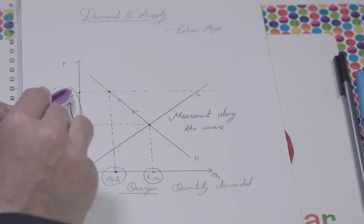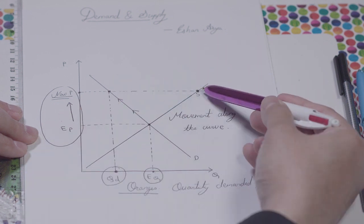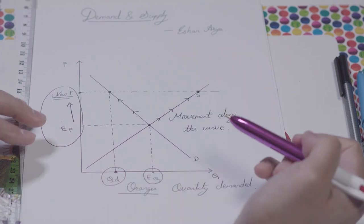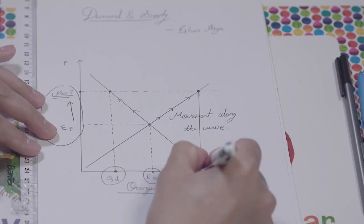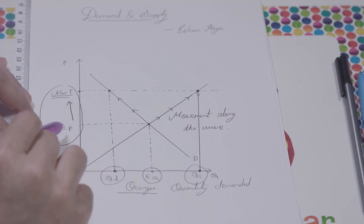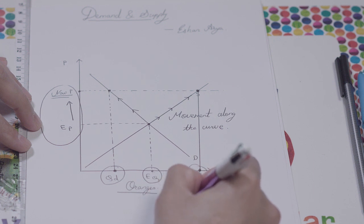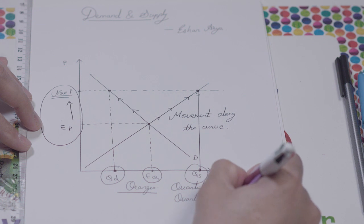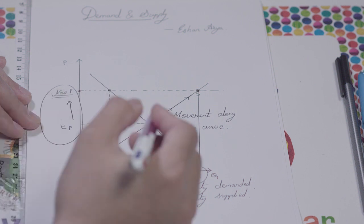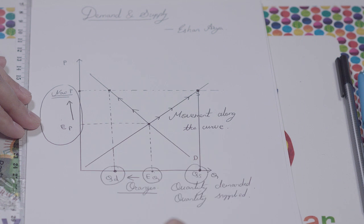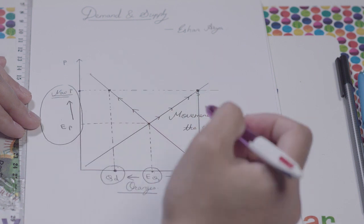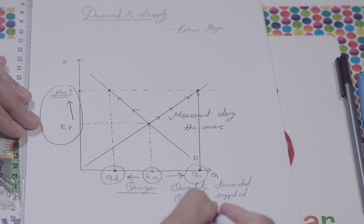Similarly, with the new price, you have a new point on the supply curve. This is also a movement from one point to another point. As a result, we have a new quantity supplied. So once again, changes in prices show changes in quantity supplied. This was movement along the curve and changes in quantity demanded and quantity supplied.